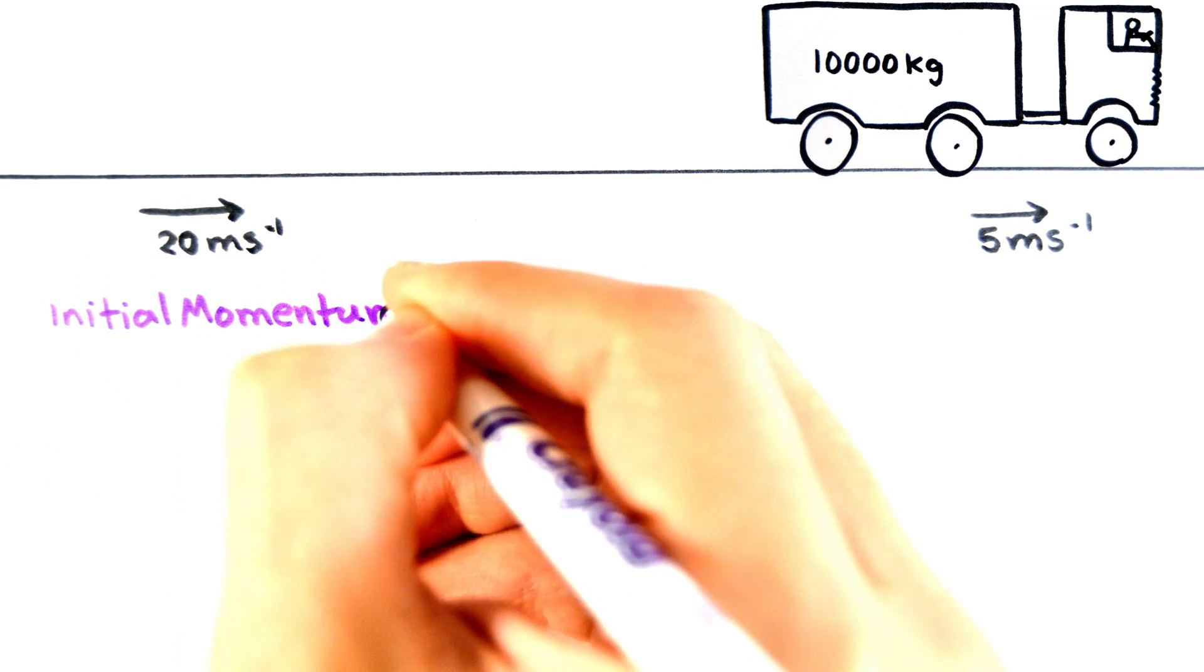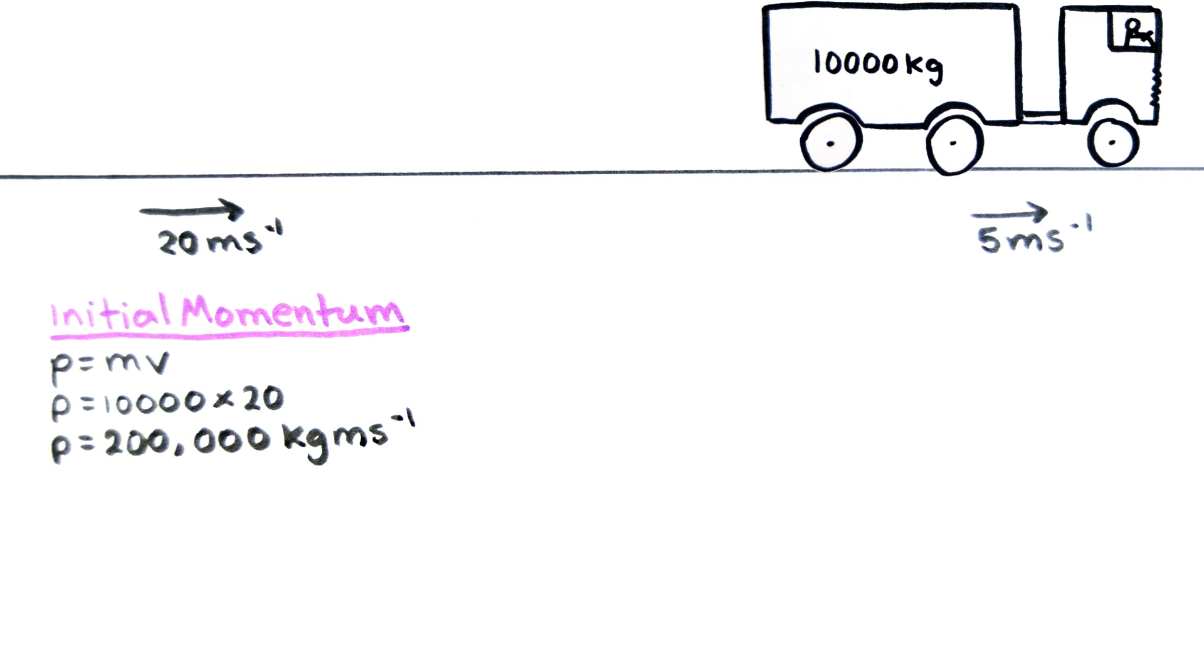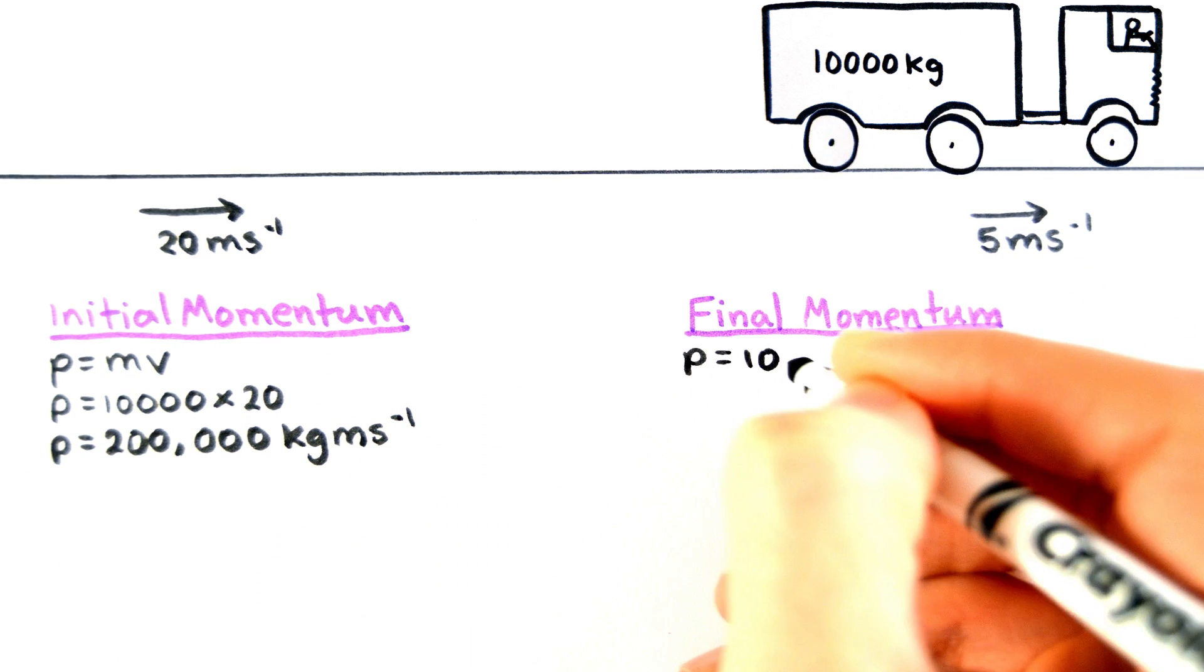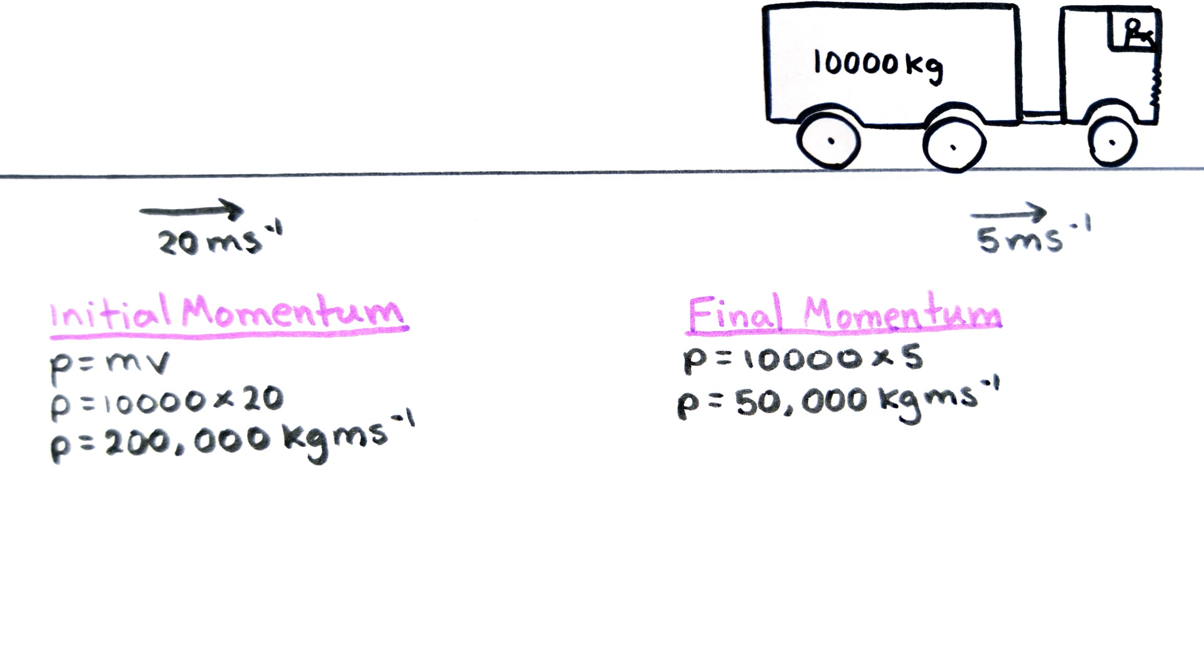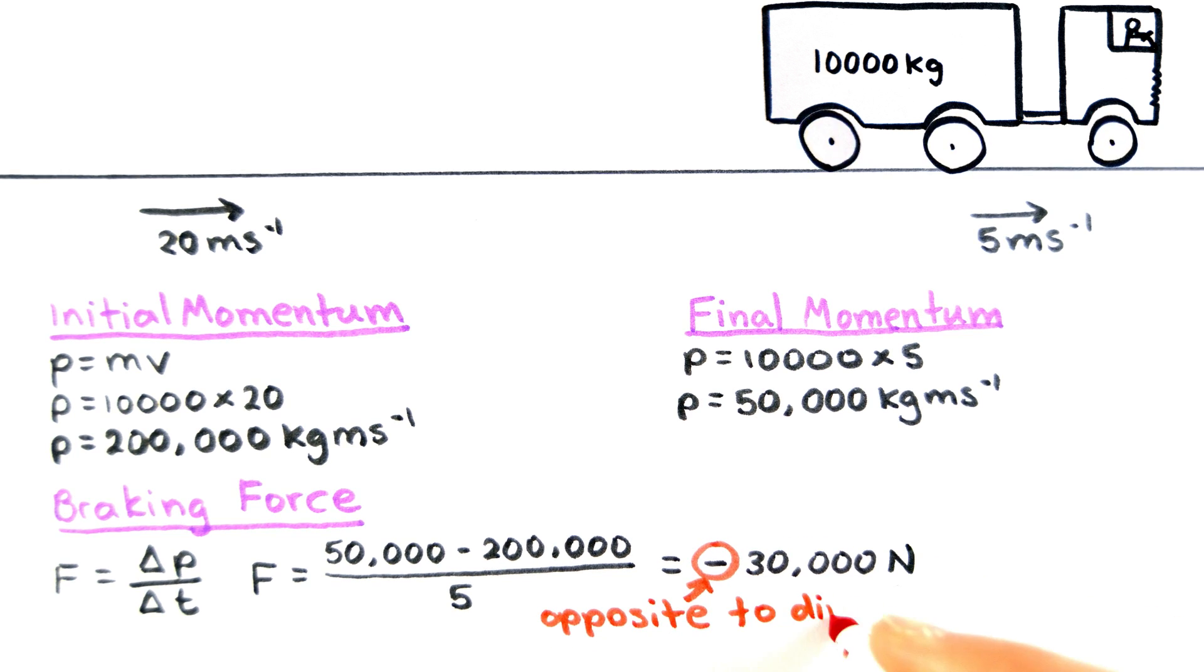From this we can work out the initial momentum of the lorry to be 200,000 kilogram meters per second, and the final momentum to be 50,000 kilogram meters per second. The average braking force can be calculated using Newton's second law, which turns out to be minus 30,000 newtons. The negative sign shows that the force is acting in the opposite direction to the direction of motion, because it is decelerating the lorry.